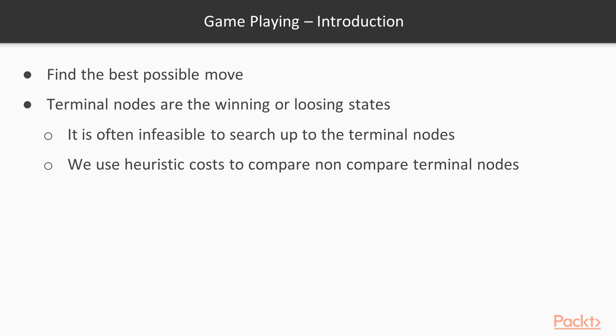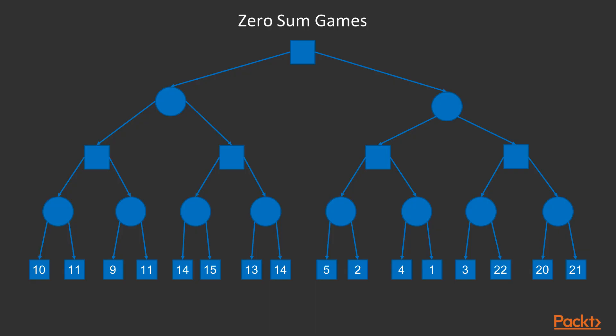We are only looking ahead and doing computations in memory to find the best possible move. The terminal nodes are the winning or losing nodes, but it is often not feasible to search all the way to the terminal nodes. So we apply heuristics to compare the non-terminal nodes. Currently I'm at a particular point and I want to make a move — I can take either the right or left subtree.